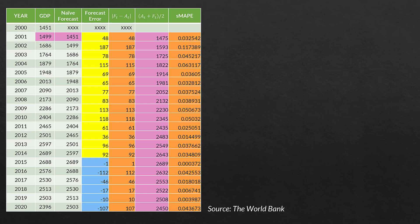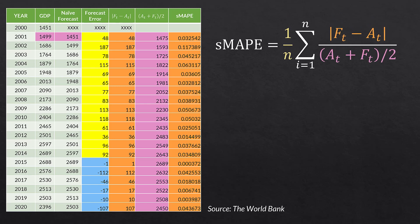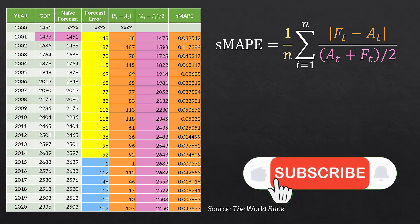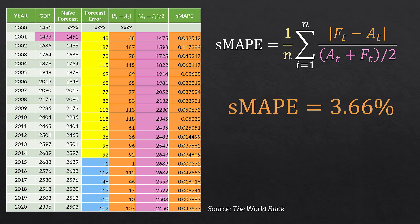In this table, each step is written out explicitly. We have our actual GDP values, our forecast column, forecast error, then the numerator of SMAPE in the orange column, the denominator of SMAPE in the pink column, and then the actual division of those in the last column. All we're doing is taking the absolute value of F sub T minus A sub T and dividing by (A sub T plus F sub T) divided by two, then averaging that final column. When we do that, we get an SMAPE of 3.66%, which is the same result we will get in R using the metrics package.